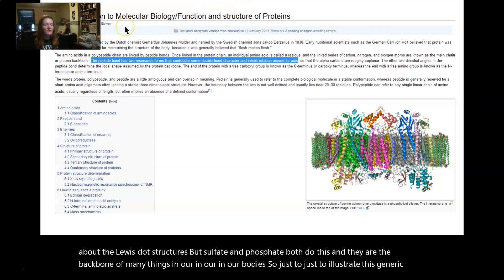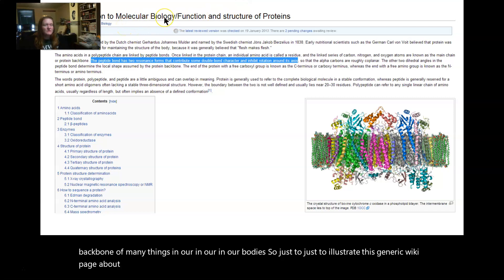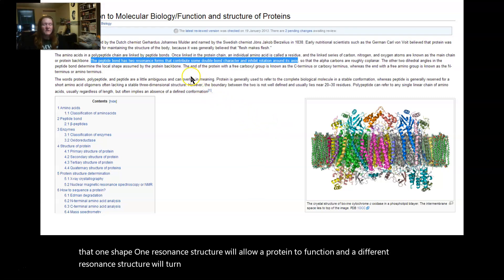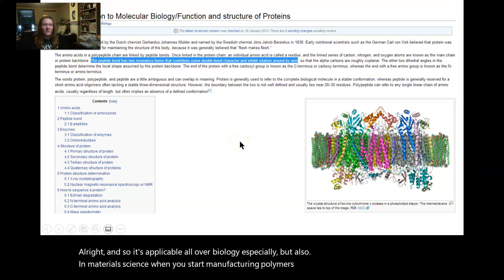A generic wiki page about molecular biology, which is the study of chemistry in biological systems, I highlighted this right here because this random website specifically mentions how important resonance forms are to the way that proteins function. So quite often, we'll find that one shape, one resonance structure, will allow a protein to function, and a different resonance structure will turn it off. It's really subtle changes. Just moving a few electrons around will do that. And so it's applicable all over biology especially, but also in material science when you start manufacturing polymers and other complicated molecules.